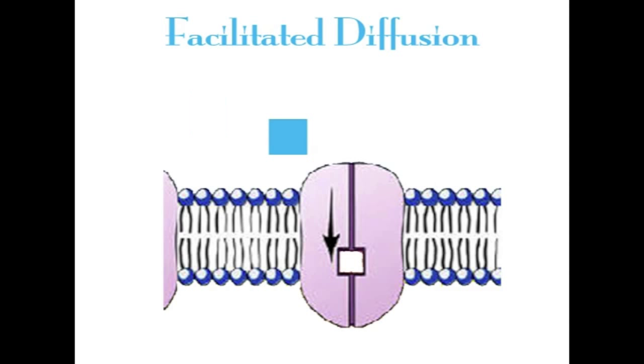Facilitated diffusion is the movement of charged substances down their concentration gradient using a carrier or transport protein. This is different from normal diffusion because these charged substances must use transport proteins in order to get across the membrane.